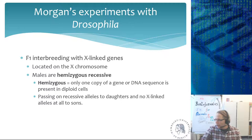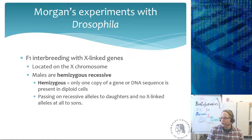Welcome back everyone, including people watching the recording. What Morgan was doing is creating an F1 interbreed with X-linked genes. These two phenotypes that they were studying were located on the X chromosome. When talking about males, males are called hemizygous recessive — they are not heterozygous.